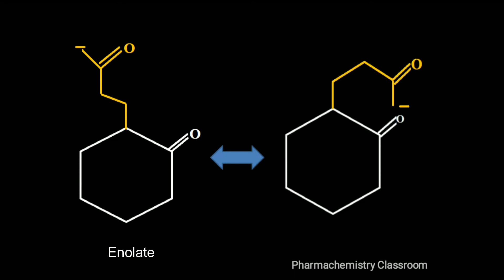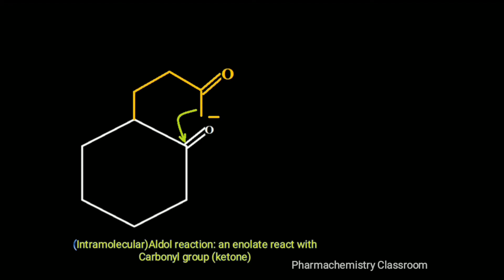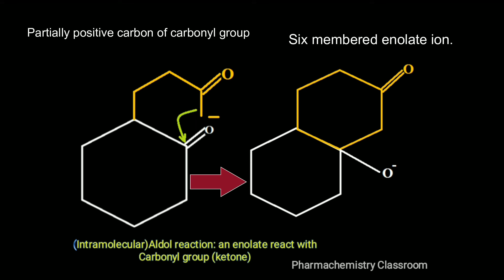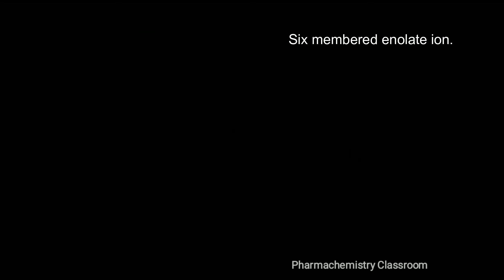We can rewrite the formed enolate to understand the ring formation better. In the next step, the formed enolate — the carbon with negative charge — attacks the positively charged carbon of the carbonyl group. The carbon with negative charge attacks the partially positive charged carbon of the carbonyl group to get a six-membered alkoxide ion.